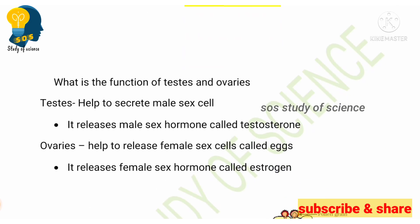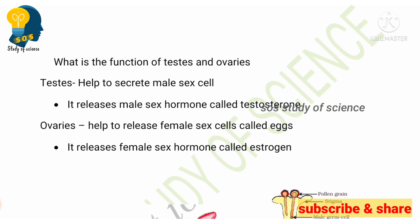Moving to next: what is the function of testis and ovaries? Questions related to this are frequently asked. The testis helps in secretion of the male sex cell called sperm, and it also releases the male sex hormone called testosterone. Ovaries help in producing the female sex cell called eggs, and ovaries also release the female sex hormone called estrogen. Practice this before going to the exam.